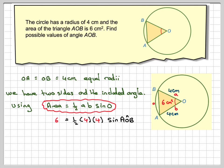Half of 4 is 2, 2 times 4 is 8, so we're going to have 6 is equal to 8 sine AOB, and then dividing by 8, we're going to have that sine AOB is equal to 6 over 8.